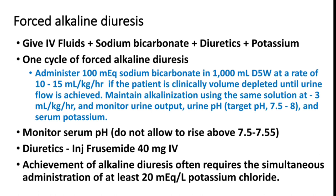Maintain alkalinization using the same solution at 3 ml per kg per hour and monitor urine output and urine pH. A target urine pH of 7.5 to 8 is required. Serum potassium must be monitored closely, as larger volumes of sodium bicarbonate can produce hypokalemia. We also must monitor serum pH, which should not be allowed to rise above 7.5 to 7.55. Frusemide can be given to produce forced diuresis and prevent pulmonary edema.